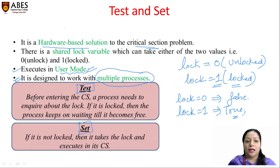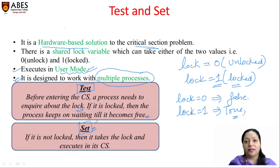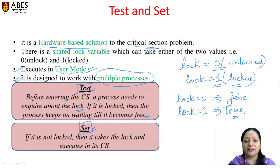So what is 'test'? Before entering the critical section, a process needs to inquire about the lock — it will first check the lock value. If it is locked, meaning some other process has already acquired the lock, then that process will keep on waiting until it becomes free. And what does 'set' mean? If the lock is unlocked, meaning the value is zero and no process is currently in the critical section, then the process wanting to enter will take the lock, set the value to one, and then execute in its critical section.